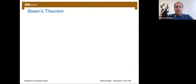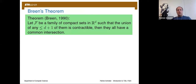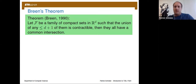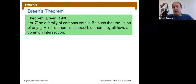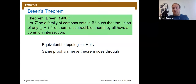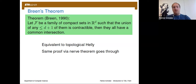Marilyn Breen (1990) found a variant: instead of intersections, look at unions. If any at most d+1 of the compact sets have contractible union, then all of them still have a common intersection. This is equivalent to the topological Helly theorem, and the same nerve-based proof works — contractibility of unions implies vanishing homology, so no induced subcomplex has homology, and the nerve is again a full simplex.